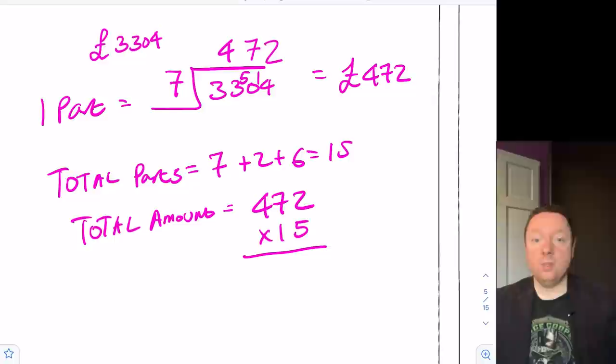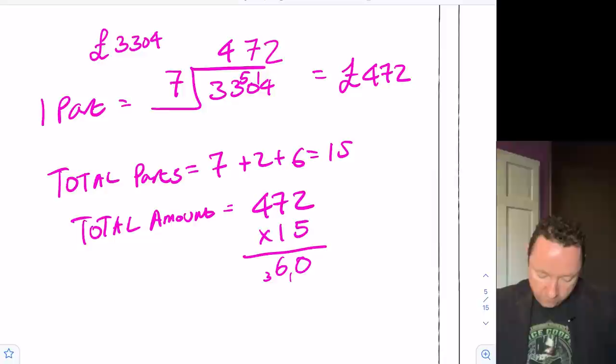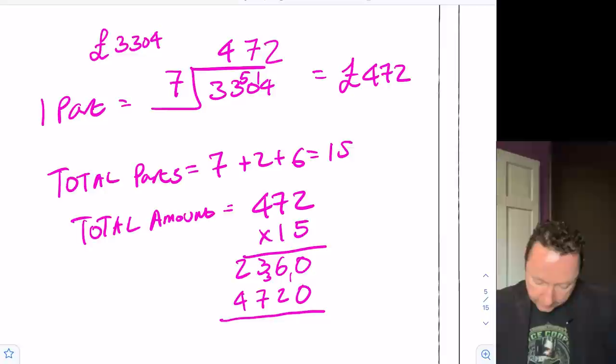So total amount, I need to do 15 times 472. I'll just do a standard sum. Five twos is 10, carry one. Five sevens is 35, plus one is 36. Five fours is 20, plus three is 23. And then one times two, one times seven, one times four. Carefully adding these together. I get zero. Six and two is eight. Seven and three is 10, carry one. Four, five, six, seven. So the total amount equals £7,080.